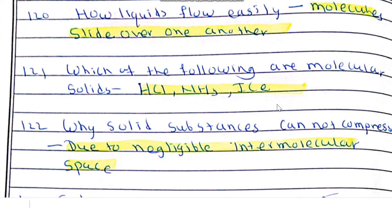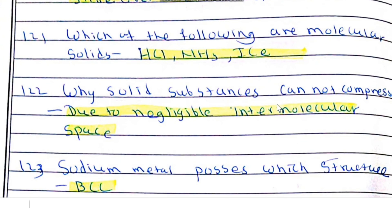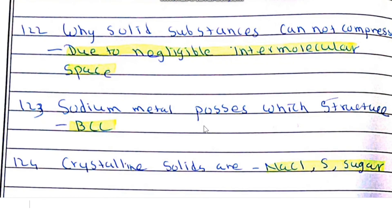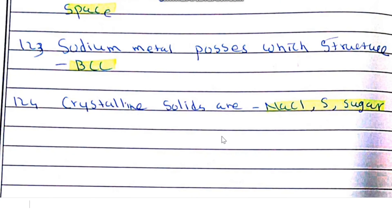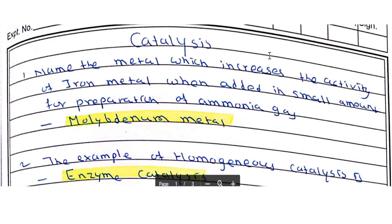Solid substances cannot be compressed because of negligible intermolecular space. Sodium metal possesses a body-centered cubic (BCC) structure. Crystalline solids include NaCl, sulfur, and sugar.